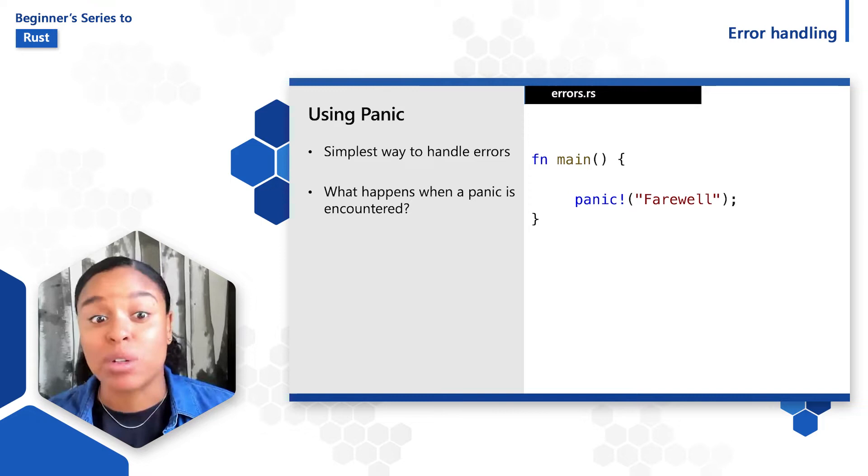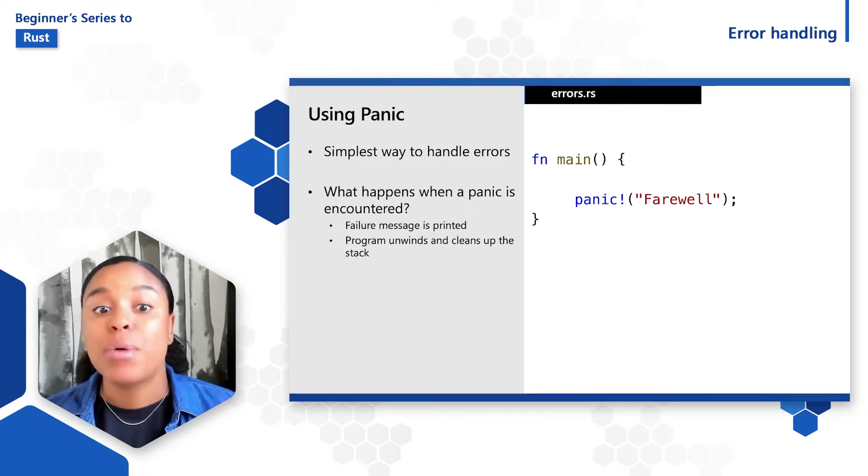So what happens when the panic macro executes? First, a failure message will be printed, then the program unwinds and cleans up the stack, and then it quits.